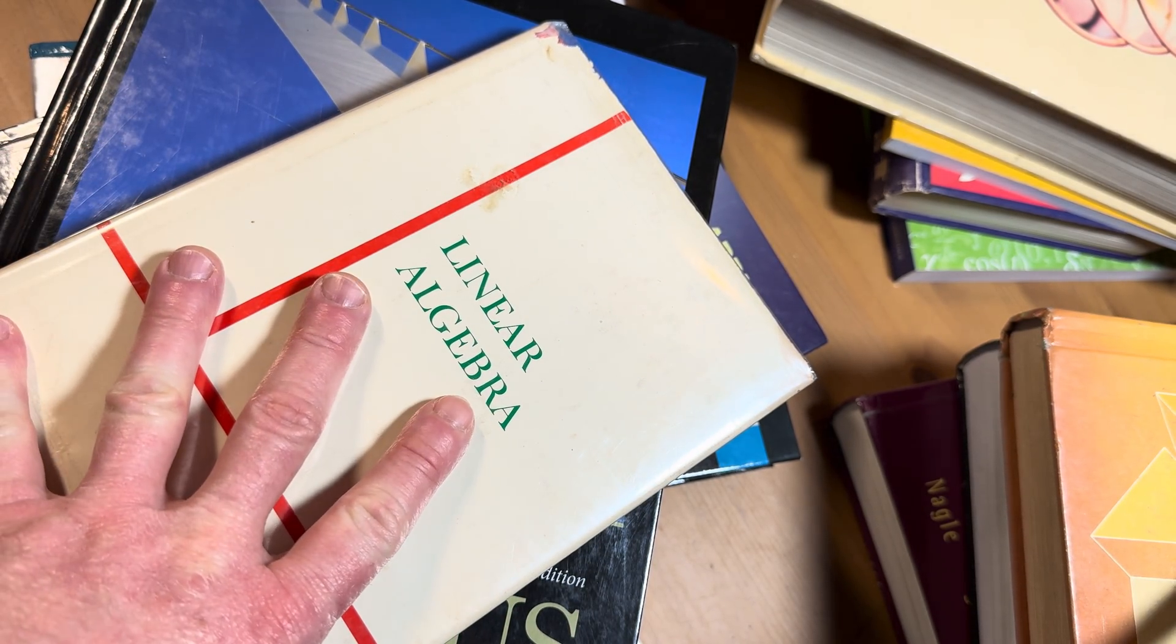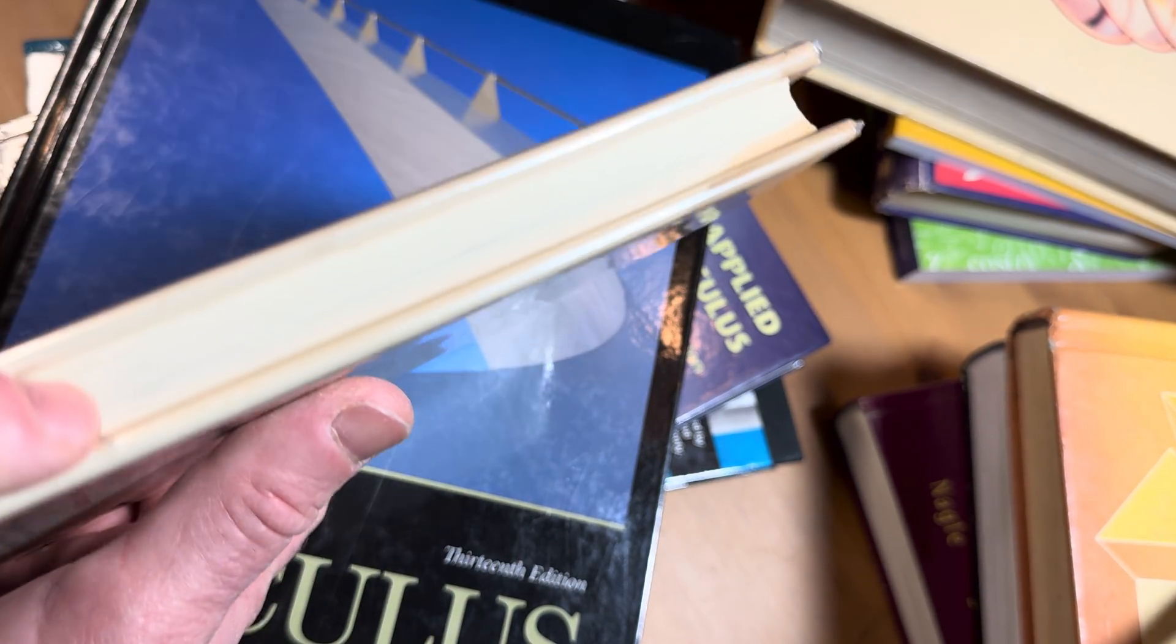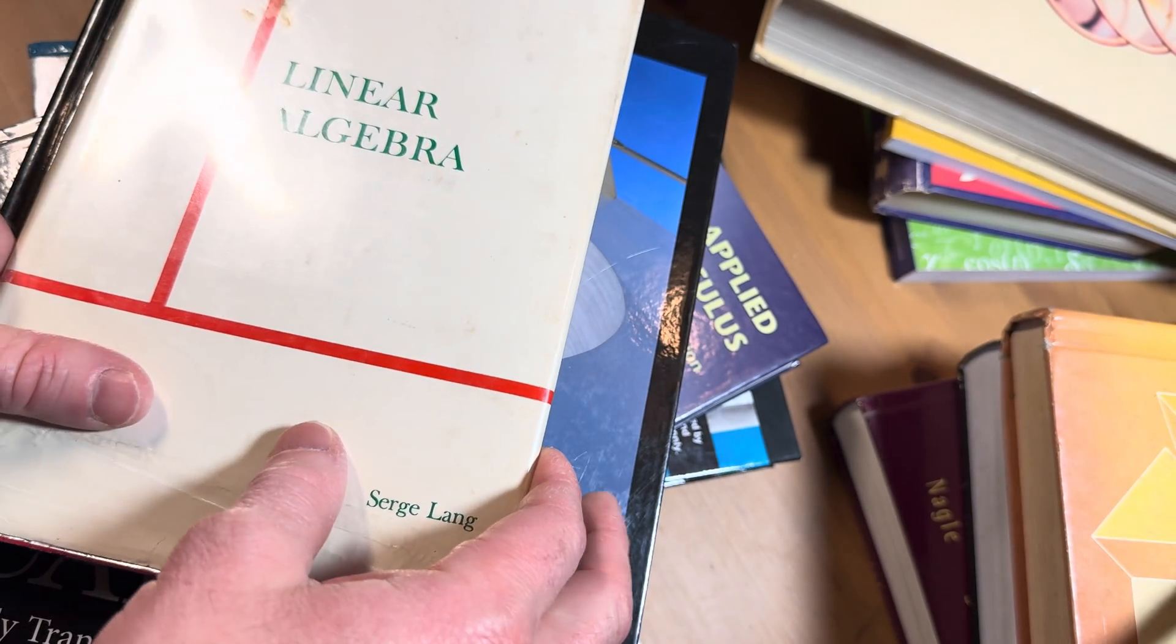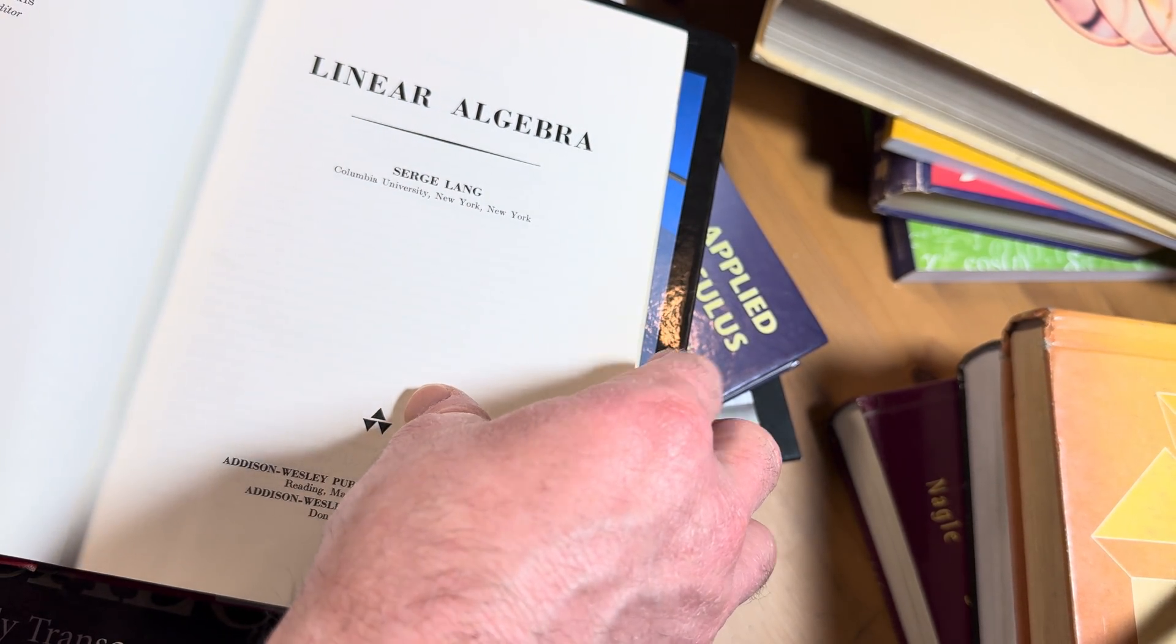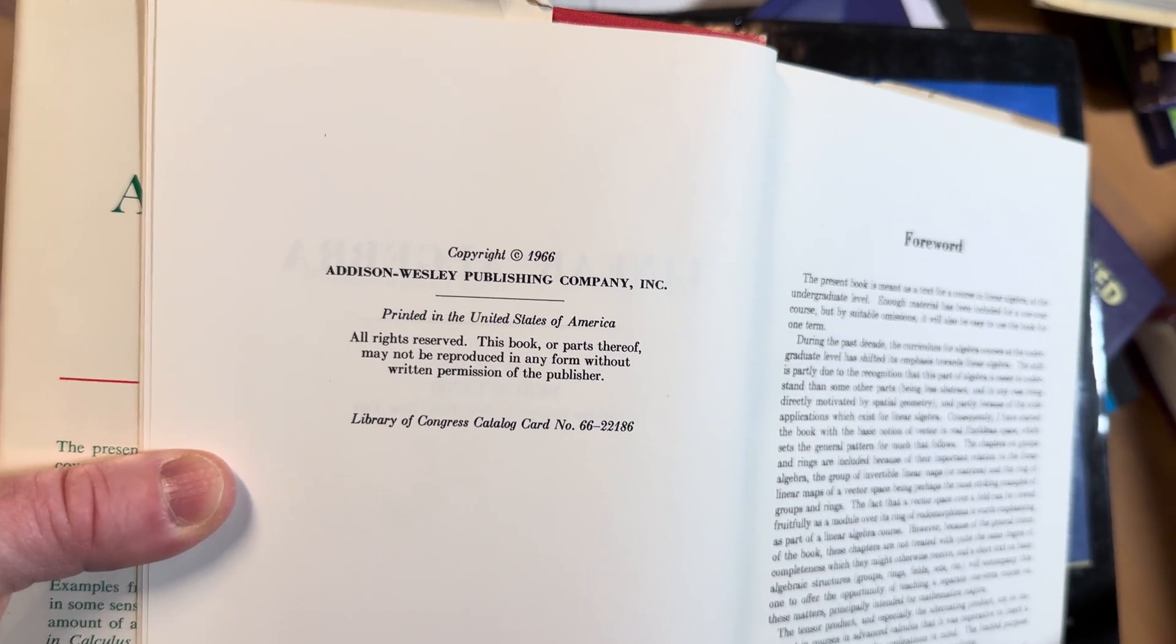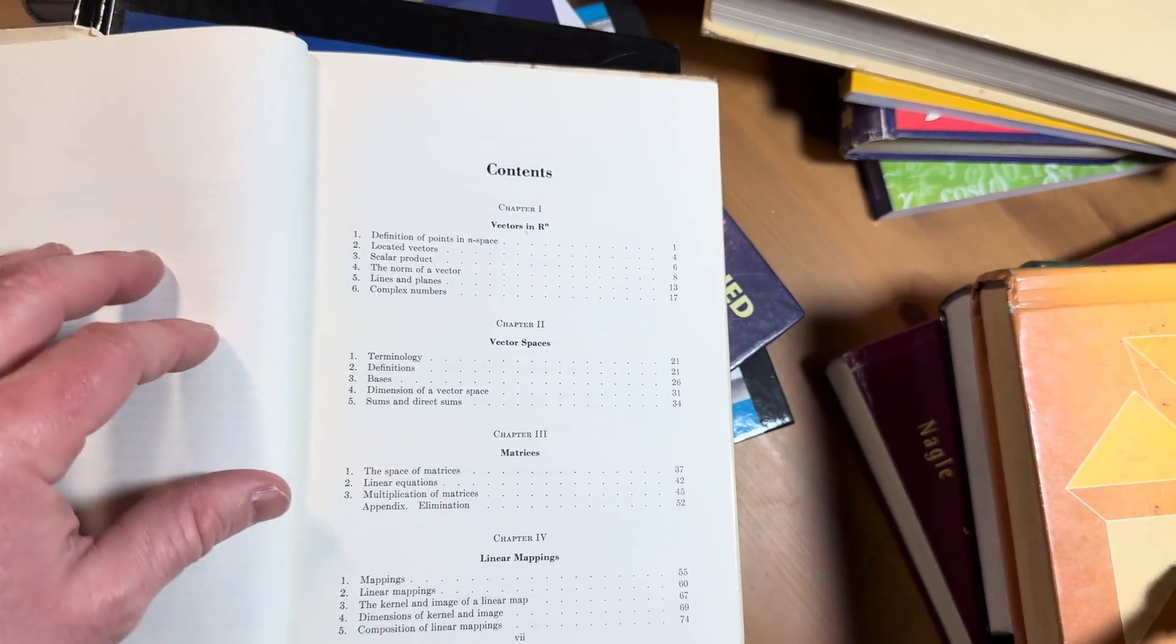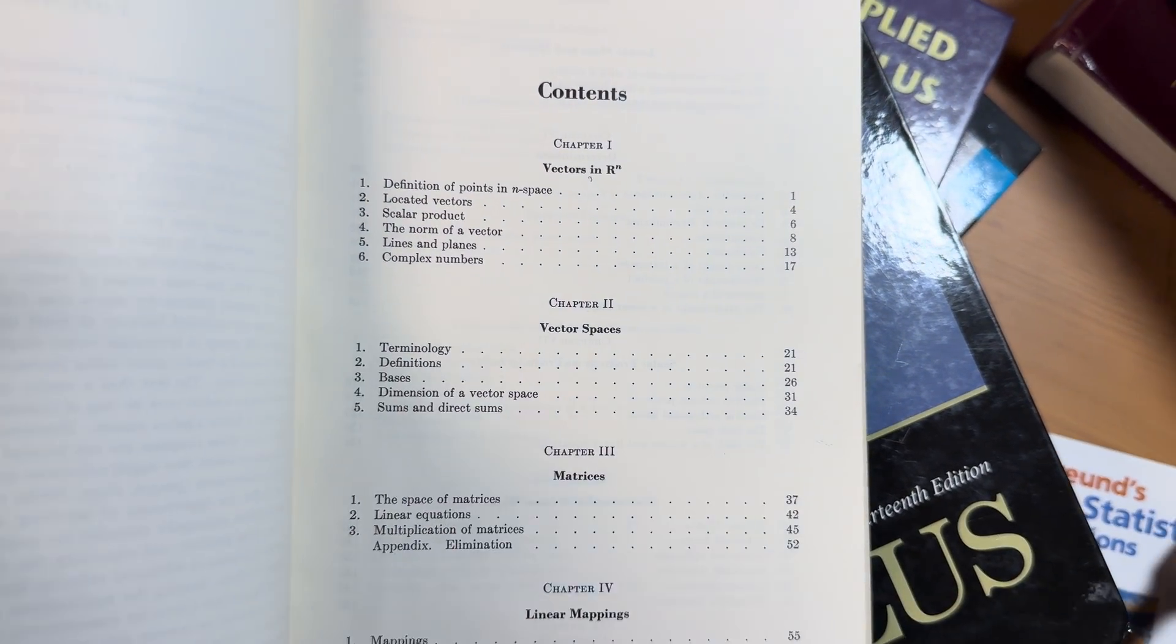So you're going to find topics in this linear algebra book that you will not find in other linear algebra books. A lot of the modern books don't contain the same topics that this older book contains. This is the first edition and this is by Serge Lang. Let's open it up and I'm going to show you what it has. Some of these topics are really cool. There's the copyright, 1966. It was a long time ago. Let's just skip the preface and go straight to the topic so you can see what it has.